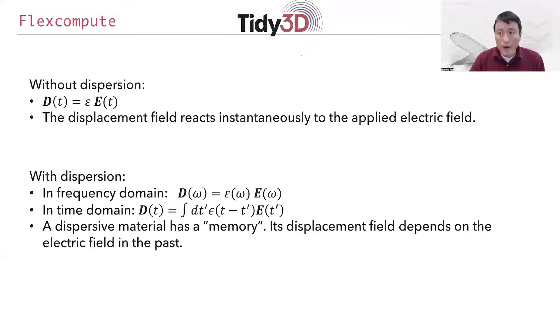Up to this point in all the previous tutorials, when we model a material, we assume the material to be dispersionless, without dispersion. For this material, when you go from the electric field at a particular time to the displacement field, which contains the dipole moment of the material at the same time, you simply multiply the electric field by the dielectric permittivity. So in the time domain picture, this equation tells you that the displacement field reacts instantaneously to the applied electric field.